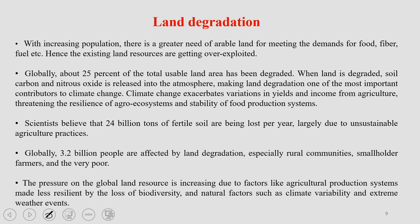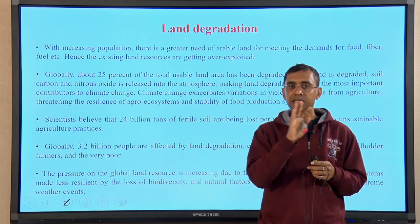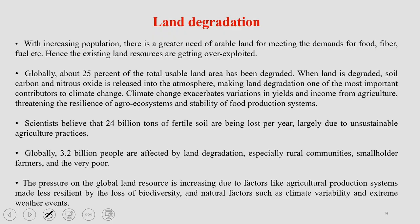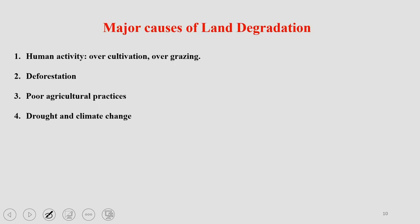What we need today is an agricultural production system with higher resilience and efficient management — one that produces food while also managing the inherent capacity of the soil to reproduce, preserving biodiversity, and accounting for natural factors such as climate variability and extreme weather events. These must be taken care of in smart planning for land management. Land as a natural resource needs to be taken care of for our own good. The major causes of land degradation are human activity, deforestation, poor agricultural practices, drought, and climate change — the last of which has aggravated most problems significantly.